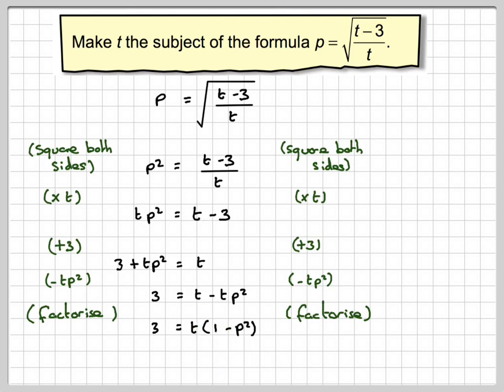Just check, t times 1 gives me t. t times minus p squared gives me minus tp squared.